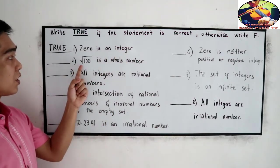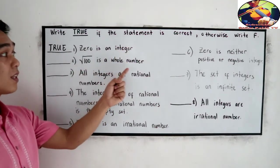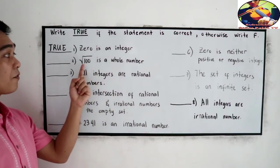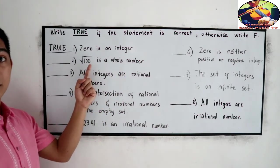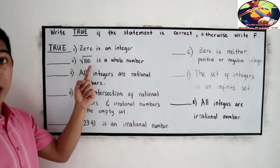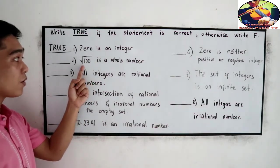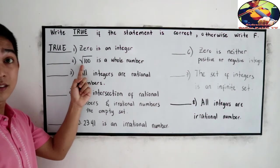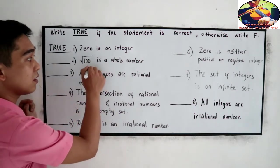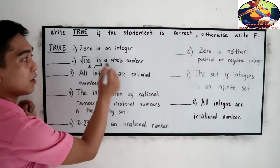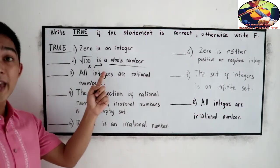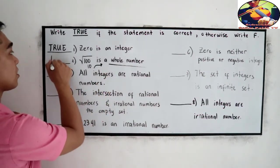Number 2, the square root of 100 is a whole number. We can simplify square root of 100 because 100 is a perfect square, and this square root of 100 is equal to 10. And 10, is it a whole number? Yes, it is. So it is also true.